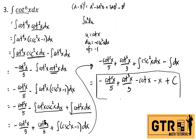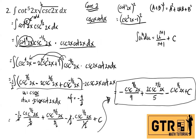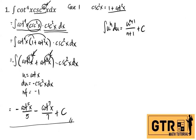Notice the pattern in the answers. For number 3, the exponents of cotangent are 5, 3, and 1 — they differ by 2. Looking at number 2, the exponents are 9/2, 5/2, and 1/2 — also differing by 2. For number 1, the exponents are 5 and 7, differing by an even number. There is always a common difference in the exponents of the resulting terms.